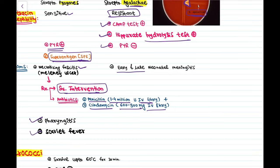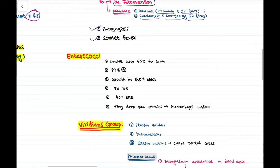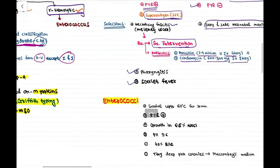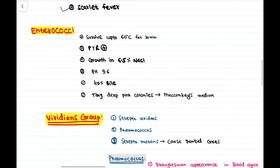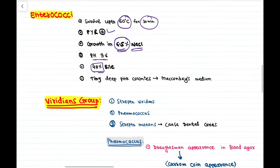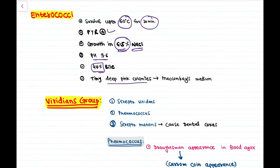Streptococcus agalactiae causes early and late neonatal meningitis. Enterococci belong to the gamma hemolytic group; they survive up to 60°C for 30 minutes, show PYR positive test, grow in 6.5% sodium chloride at pH 9.6 and 40% bile, and show deep pink tiny dripping colonies on MacConkey medium.